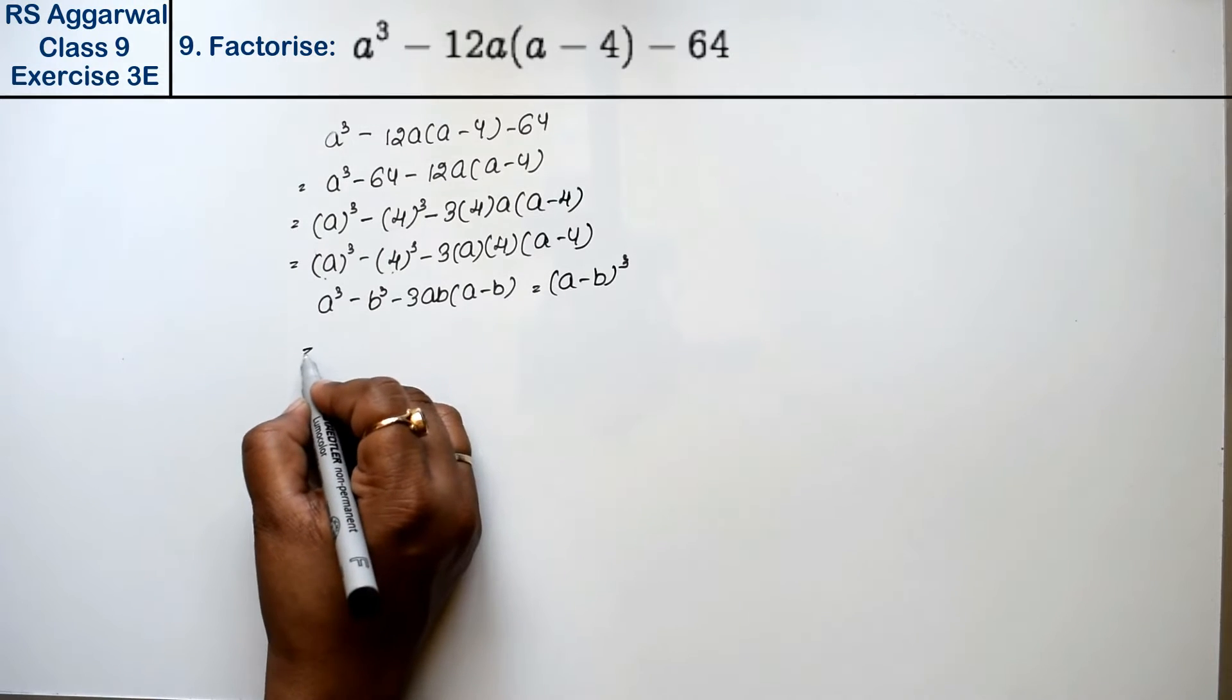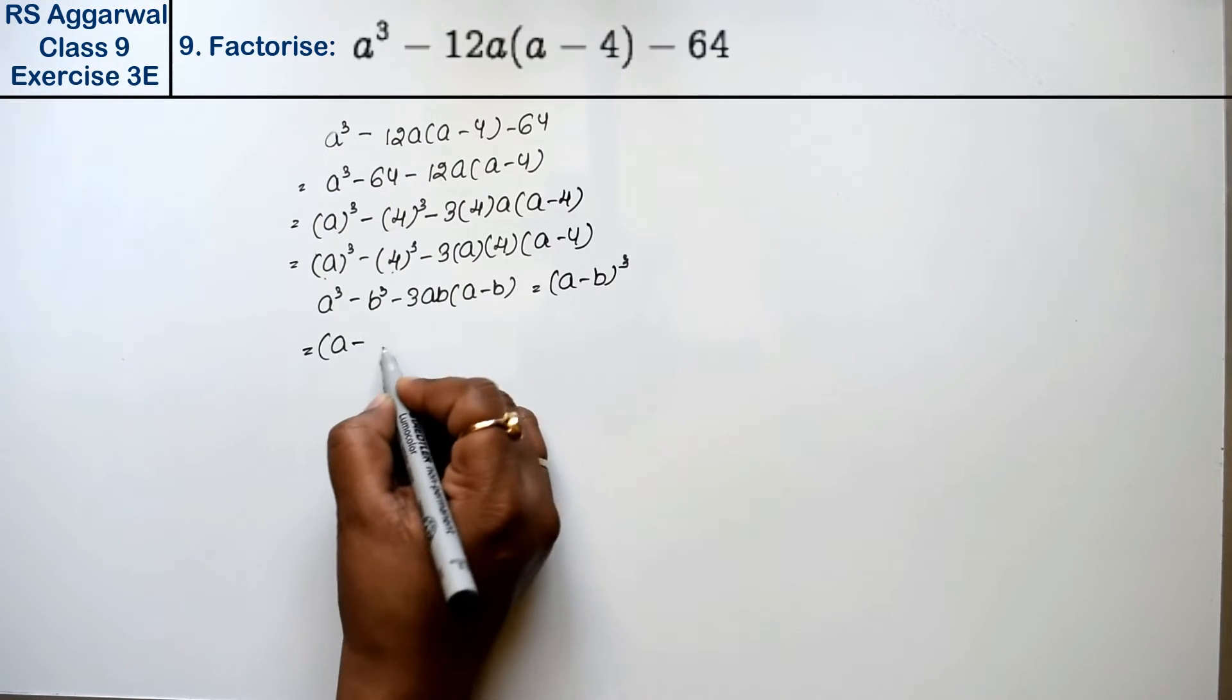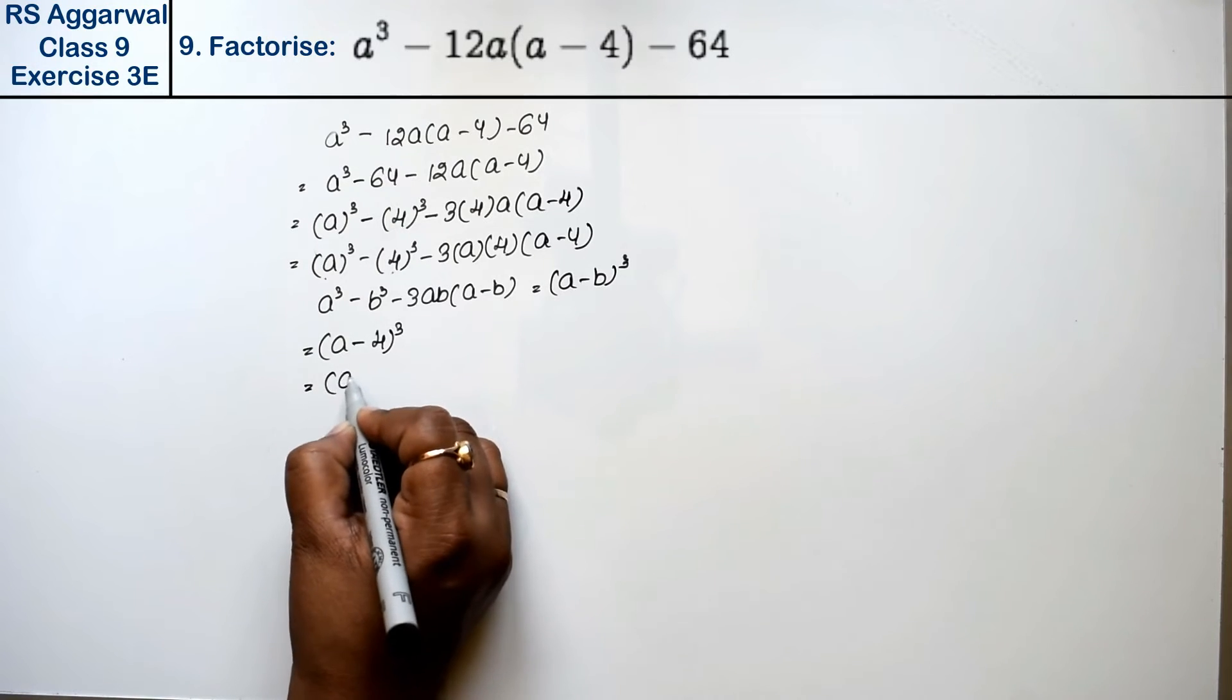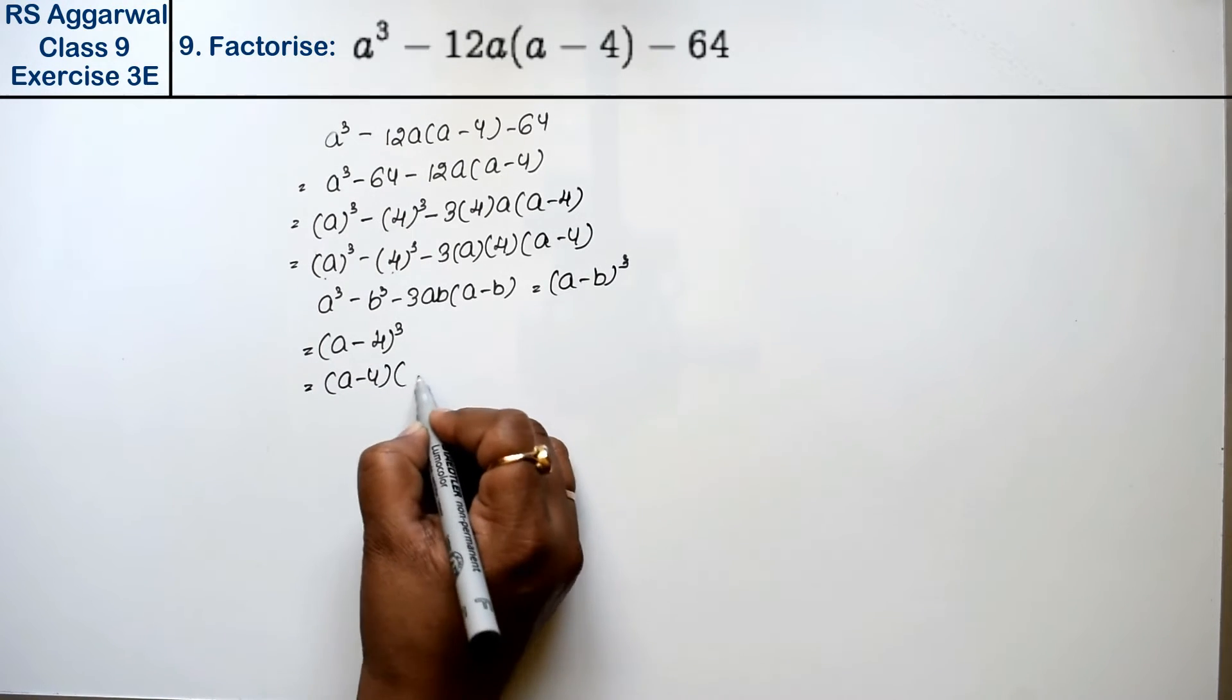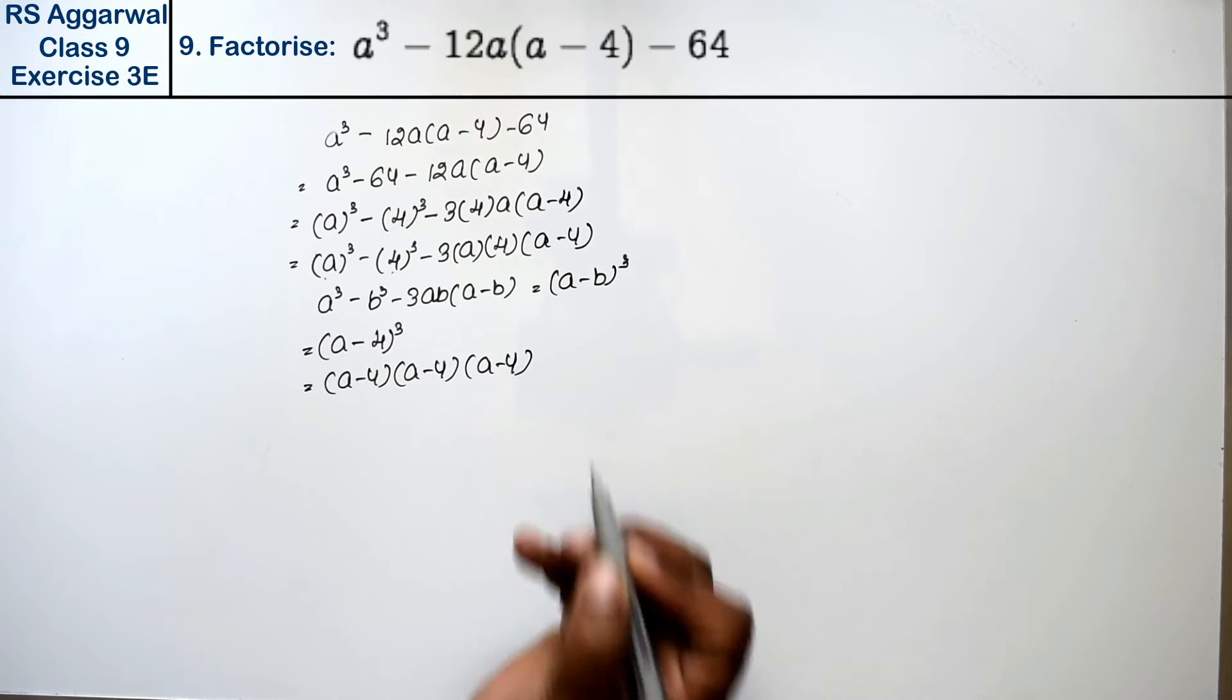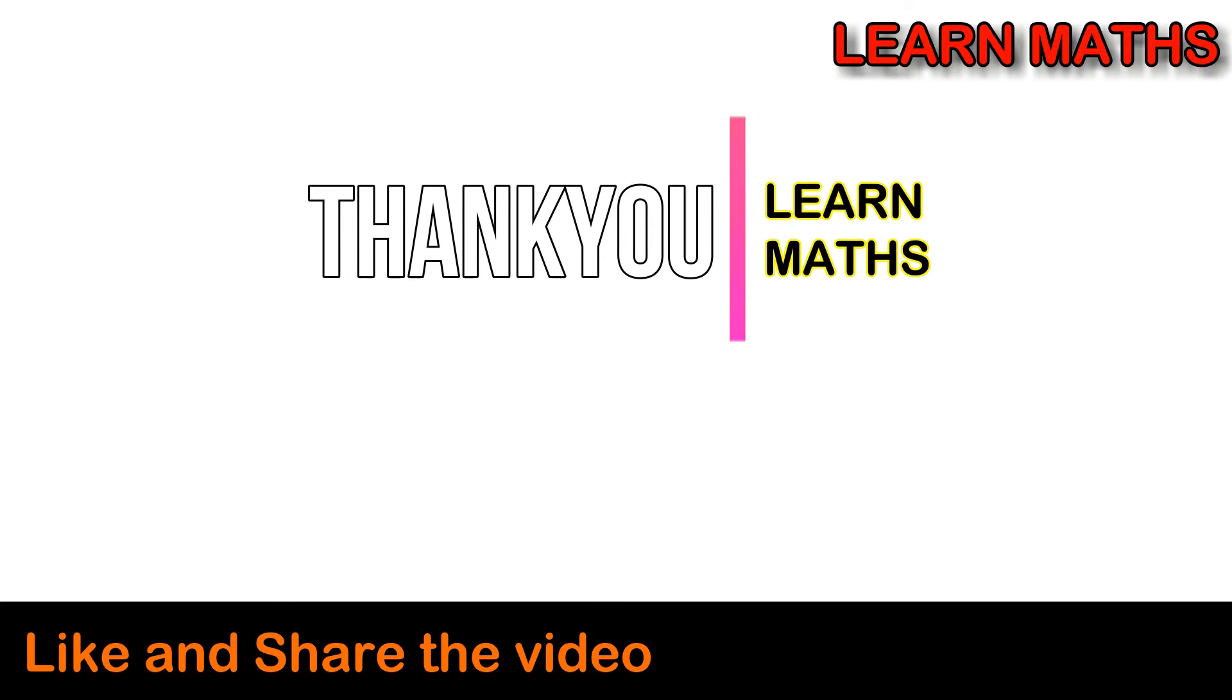So a is a, b is 4, whole cube. So what can we write? This is (a - 4), (a - 4), and (a - 4). That is the answer. Thank you.